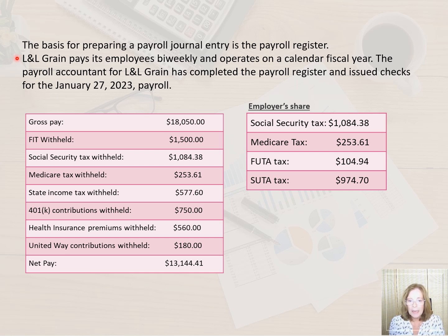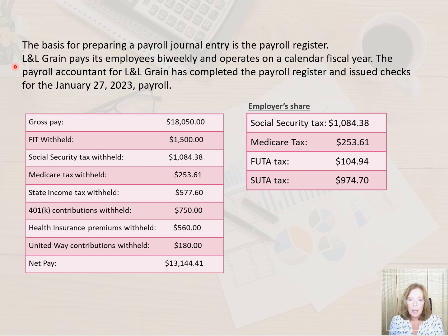L&L Grain pays its employees biweekly and operates on a calendar fiscal year, which just means that the company's financial statements are prepared for the time period from January to December. Many companies have a fiscal year, which means that it begins in a month other than January and ends in a month other than December. Some companies use a fiscal year because it more adequately reflects the seasonality in their business.